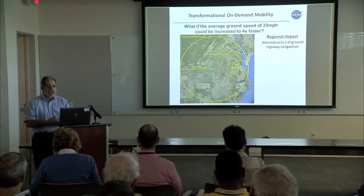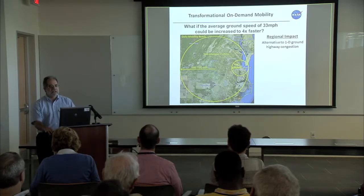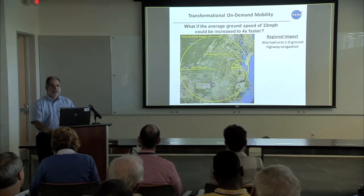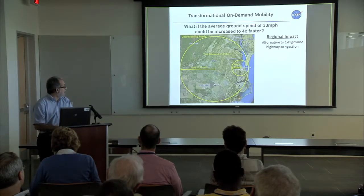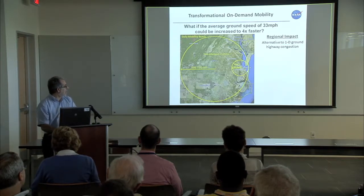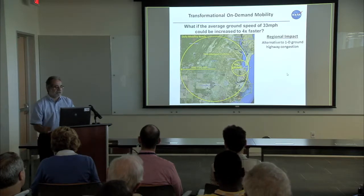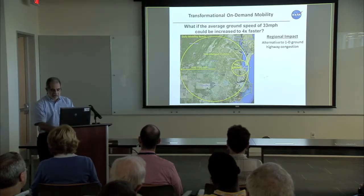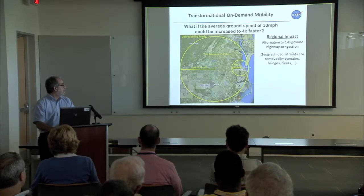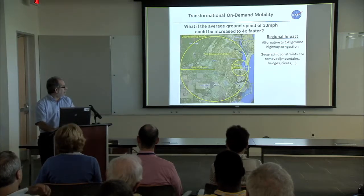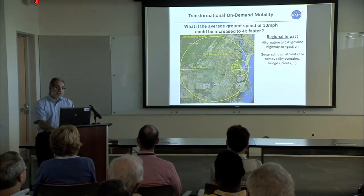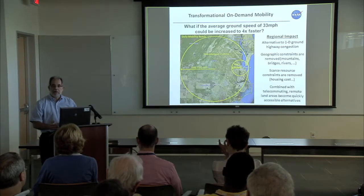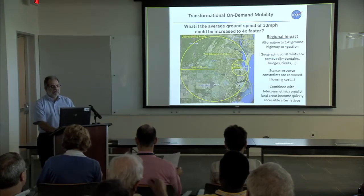On-demand mobility is a societal capability more than it is a technology. One goal is to achieve higher door-to-door average trip speeds than is possible today. Just think about what we could do if we could extend our daily range from this small area called Hampton Roads all the way throughout Virginia and the better part of North Carolina. Geographic constraints are removed, along with the infrastructure necessary to overcome them — bridges, tunnels, et cetera. Scarce resource constraints are removed, and combined with telecommuting, it really opens up other areas of the place we call Earth.